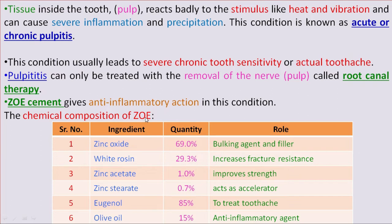The composition of Zinc Oxide Eugenol cement consists of solid and liquid materials. The solid ingredients are Zinc Oxide, White Rosin, Zinc Acetate, and Zinc Stearate. The liquid components are Eugenol and Olive Oil.